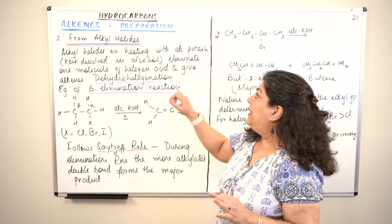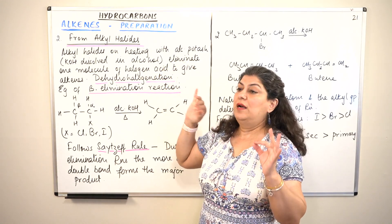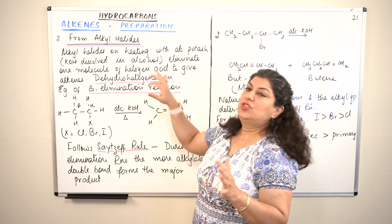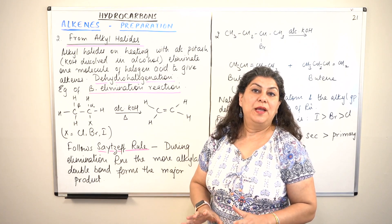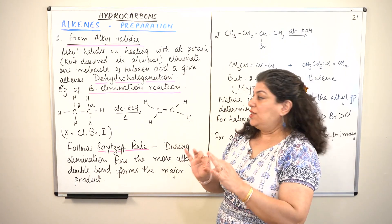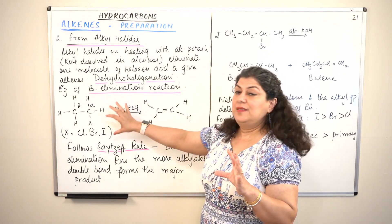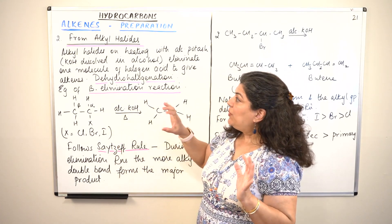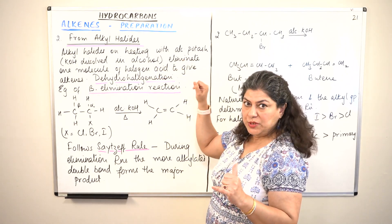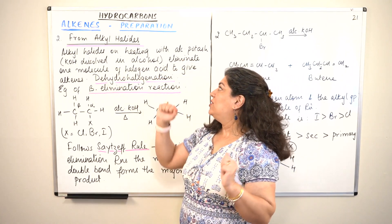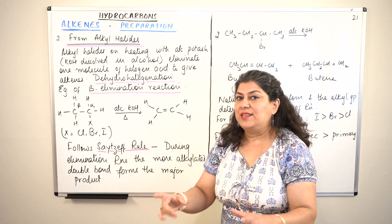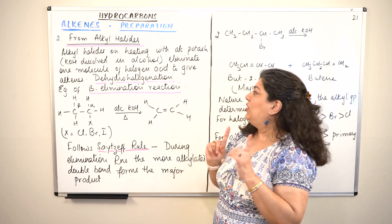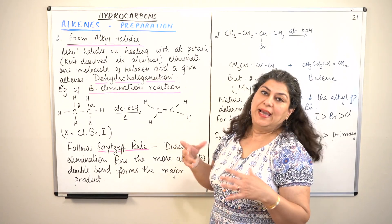Alkyl halides on heating with alcoholic potash — that is potassium hydroxide dissolved in alcohol — eliminates one molecule of halogen acid to give alkenes.